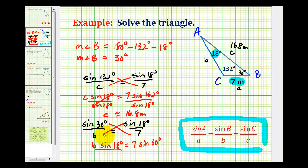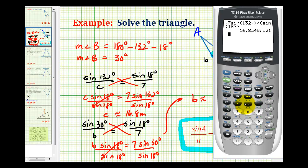So now we'll divide by sine 18 degrees again. And this quotient will give us the length of side B. So our numerator is 7 sine 30 degrees divided by sine 18 degrees. So the length of side B is approximately 11.3 meters.